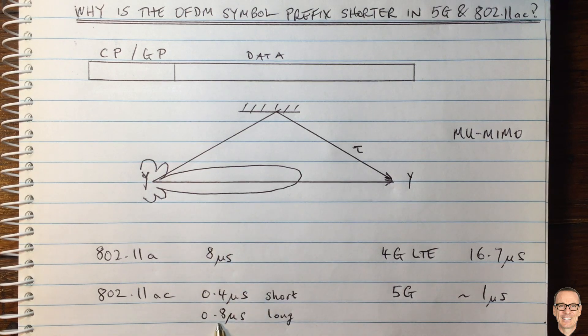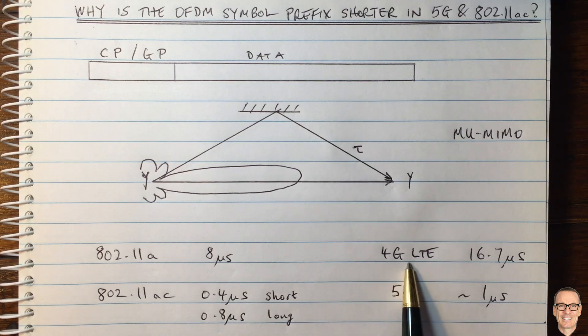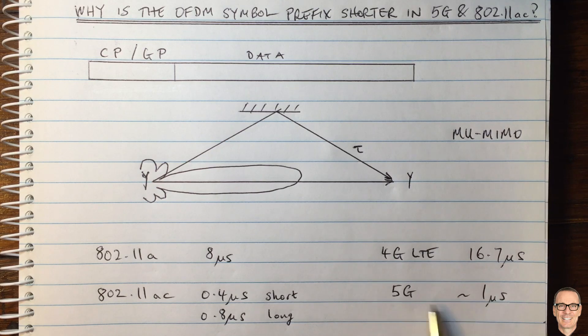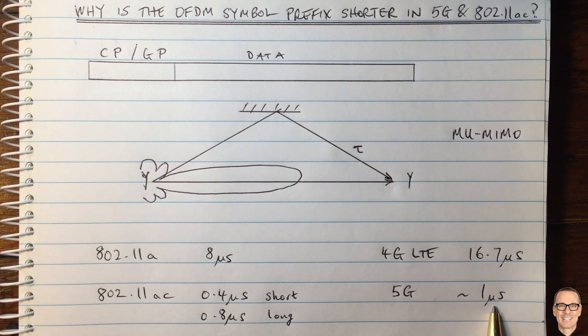In the 4G LTE system there was 16.7 microseconds and in 5G it's typically around one microsecond. Hopefully this video has given you some insights into the prefix length in these two new systems.